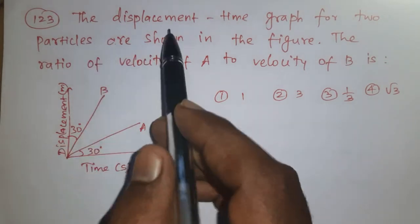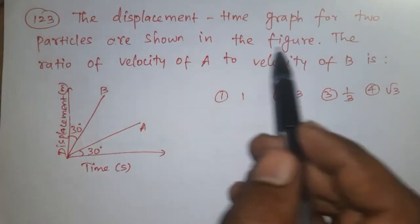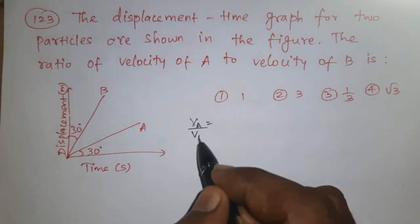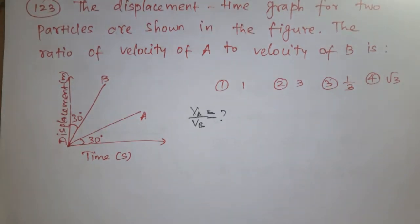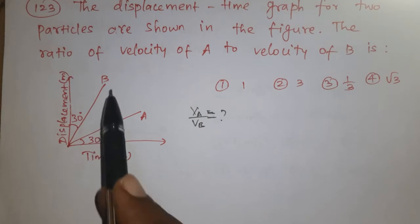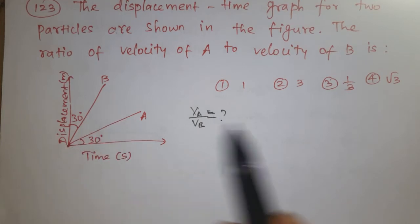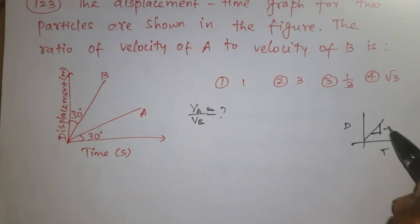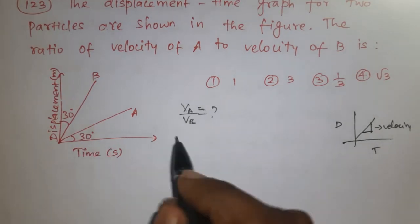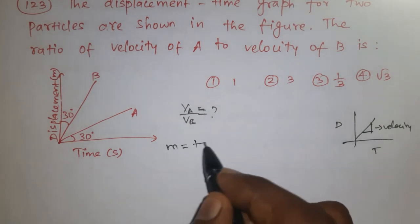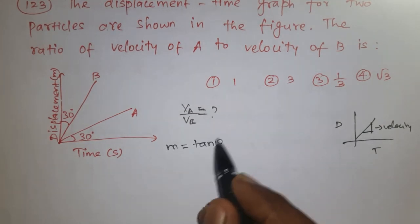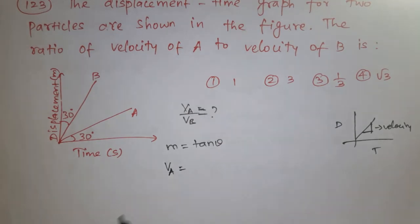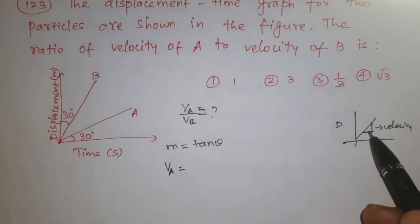Question number 123. The displacement-time graph for two particles A and B is shown. The ratio of velocity of A to velocity of B is required. From a displacement-time graph, slope gives velocity. The slope formula is M = tan θ. For particle A, velocity VA = tan θA, where θA is the angle particle A makes with the time axis.